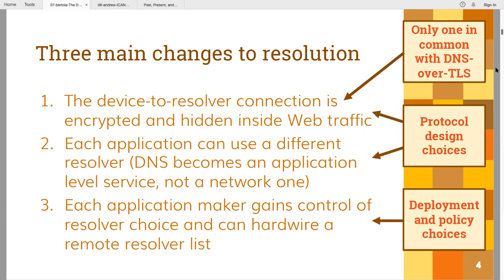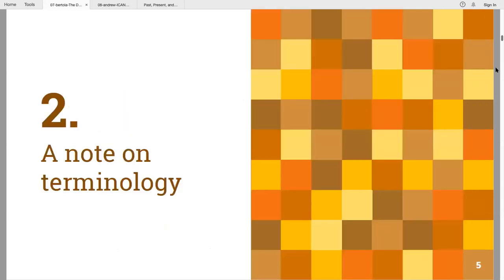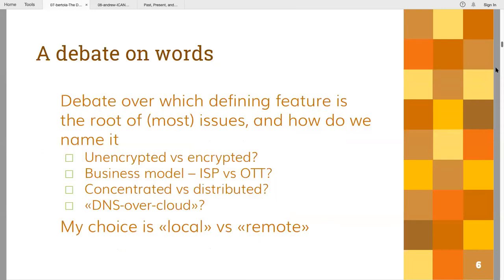Before we get into more detail, I want to note on terminology, because part of the difficulty in this discussion is that it's never been clear even what words to use. Initially there was confusion about the key dichotomy. Some people were discussing whether it's a matter of encryption, whether it's a matter of the business model of the people now running the resolvers. In the end, the DNS over cloud definition was proposed, but I don't think it's really a matter of cloud. In my opinion, the real contrast is between local resolution and remote resolution.